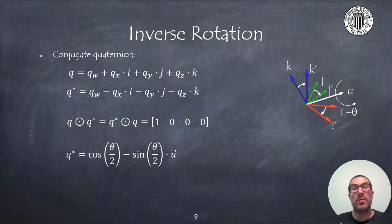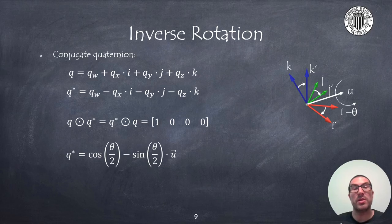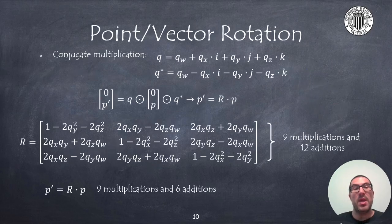To obtain the inverse of a rotation when using quaternions is very simple. We simply have to compute the conjugated quaternion, which implies that the last three elements are negated. We can verify that both the left and right multiplication of the conjugate quaternion makes the resulting orientation equivalent to a zero rotation. If we want to perform the rotation of a point or vector, we must first construct the quaternion associated with the point, pre-multiply it with the rotation quaternion, and post-multiply it with the conjugated quaternion.